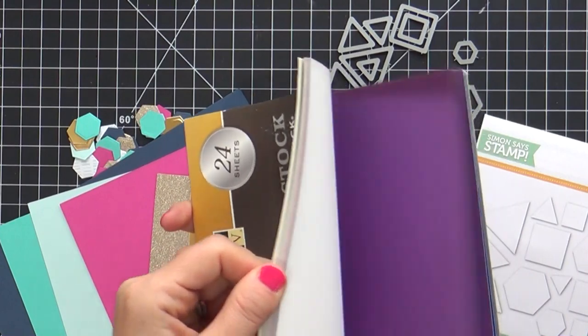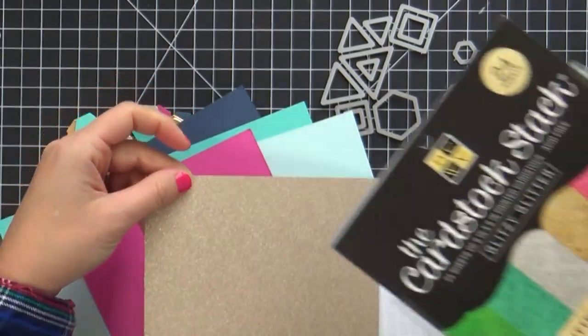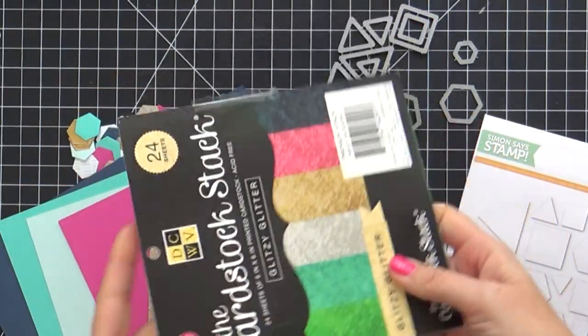The foil cardstock came out of this foil pack. You can get these in the Simon Says Stamp store. And then the glitter one is also out of this glitter paper pack. Six by six.